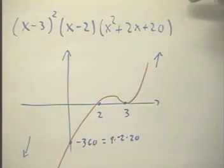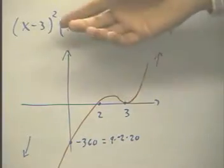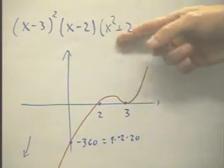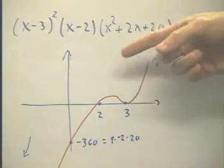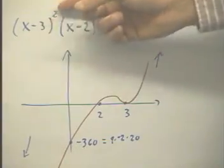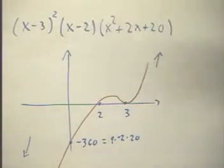Far left behavior is down, far right behavior is up. If x is a large negative number, this is negative, but this will be positive because of the x squared, and this will be positive for any x because it's squared.